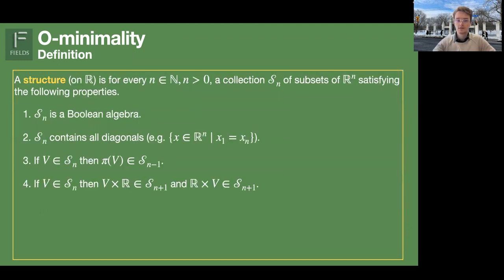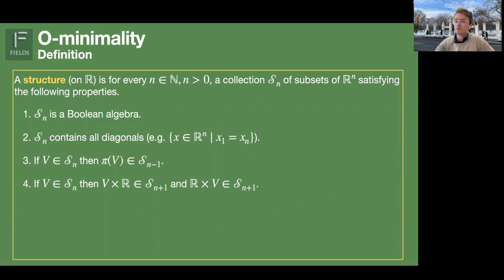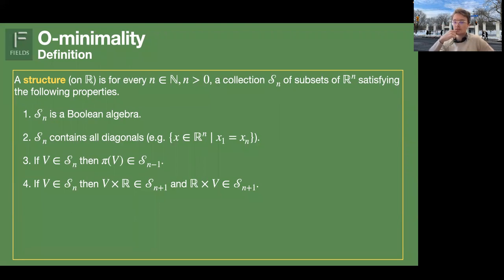So let's start. What is an O-minimal structure? A structure on the reals is a collection of subsets satisfying geometric conditions. The first is that you can do Boolean operations with the sets — you can take unions, intersections, and so on. We want some minimal amount of sets to be in there, for instance diagonals, like the diagonal line in R², and also projections and products of sets, which is very natural if you want to do geometry.